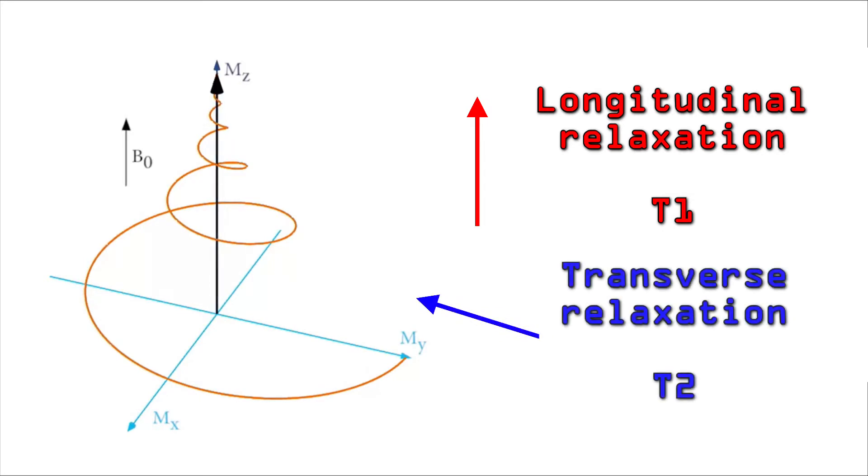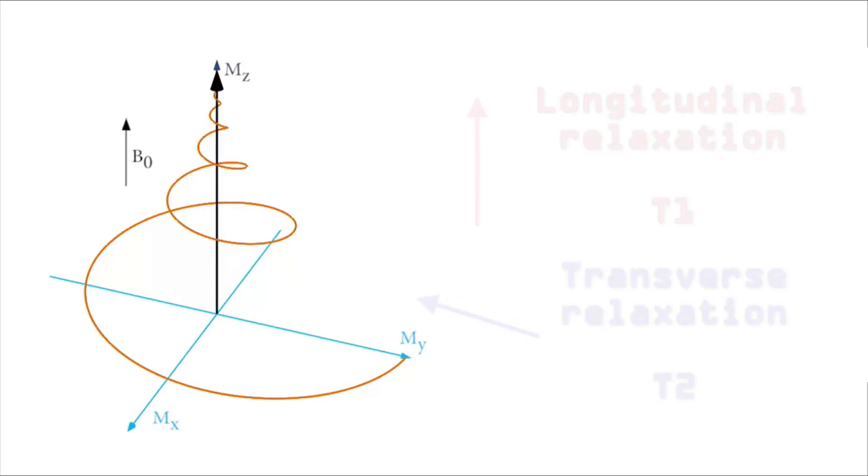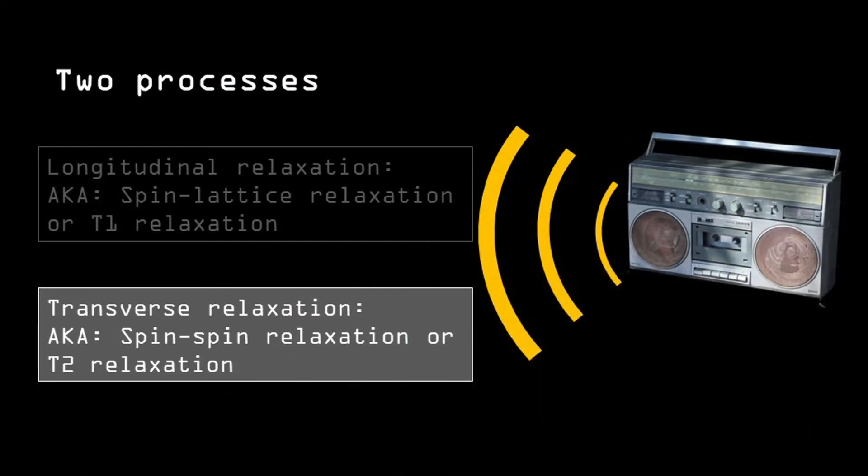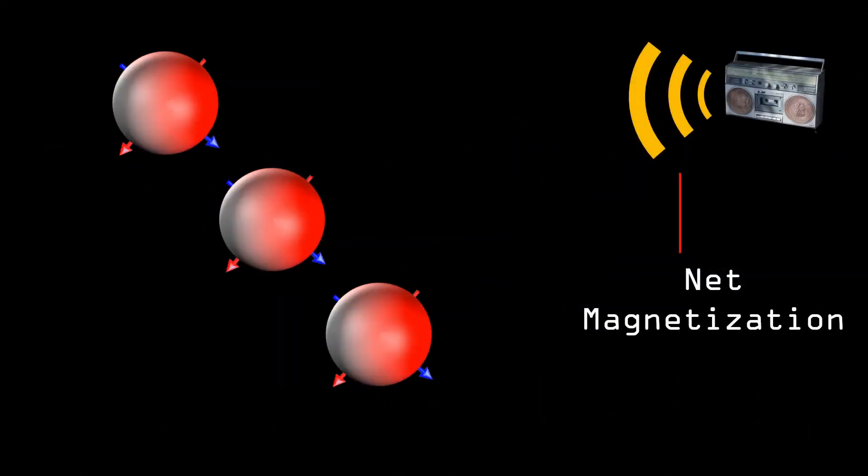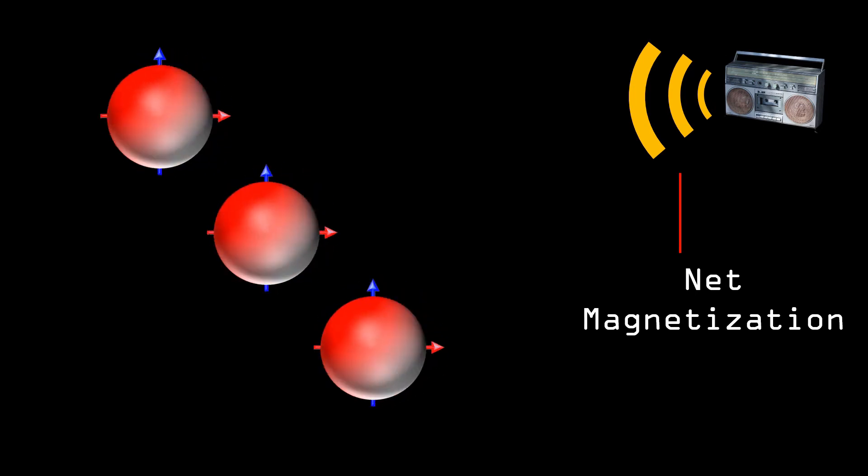Now, there is also a second process caused by the radio frequency pulse. And that is, that all protons start to spin in synchrony. So at one specific point in time, all protons point towards the same direction. This means that there is a magnetization in the transverse direction of the main magnetic field.